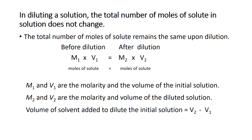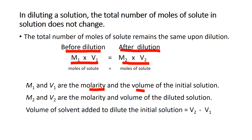In diluting a solution, the total number of moles of solute in solution does not change — the total number of moles of solute remains the same upon dilution. So the equation is M1 times V1 equals M2 times V2. The left side is before dilution and after the equality sign is after dilution. M1 and V1 are the molarity and volume of the initial solution; M2 and V2 are the molarity and volume of the diluted solution.